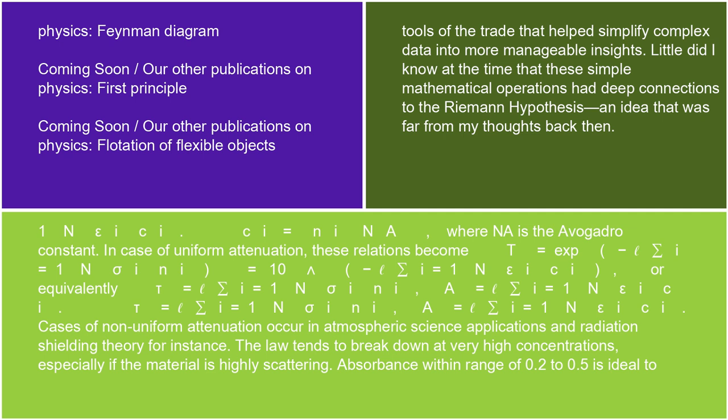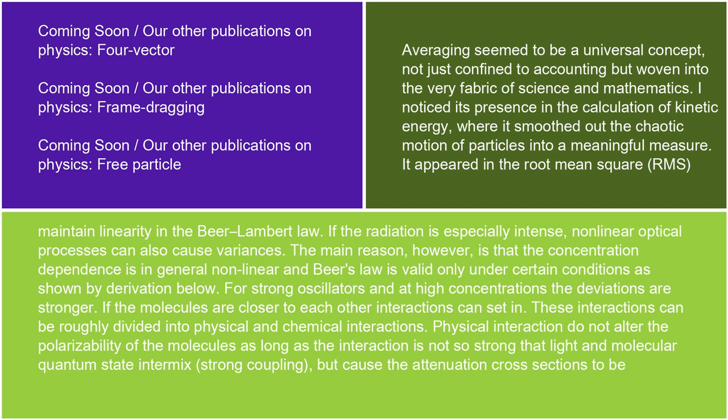Cases of non-uniform attenuation occur in atmospheric science applications and radiation shielding theory, for instance. The law tends to break down at very high concentrations, especially if the material is highly scattering. Absorbance within the range of 0.2 to 0.5 is ideal to maintain linearity in the Beer-Lambert Law. If the radiation is especially intense, nonlinear optical processes can also cause variances.